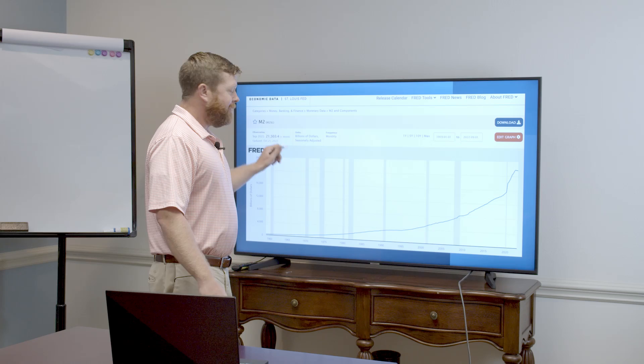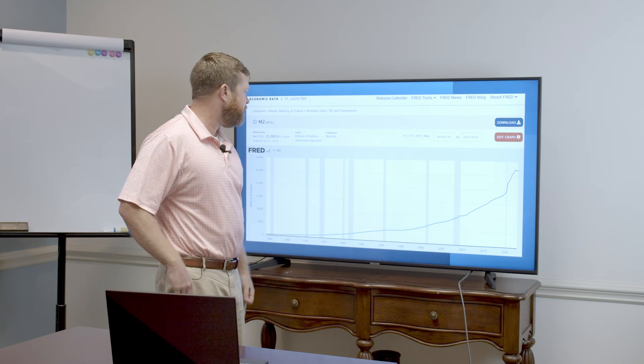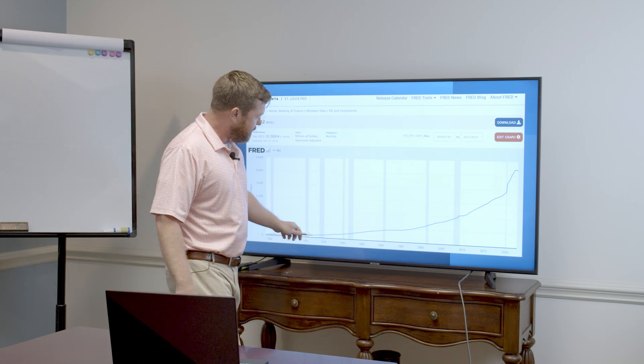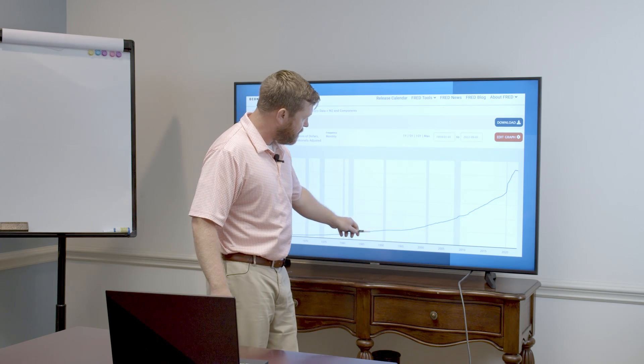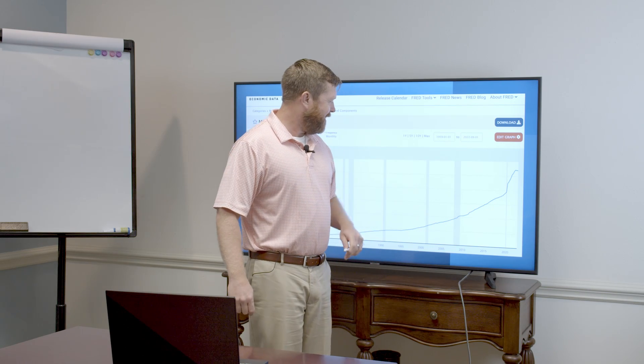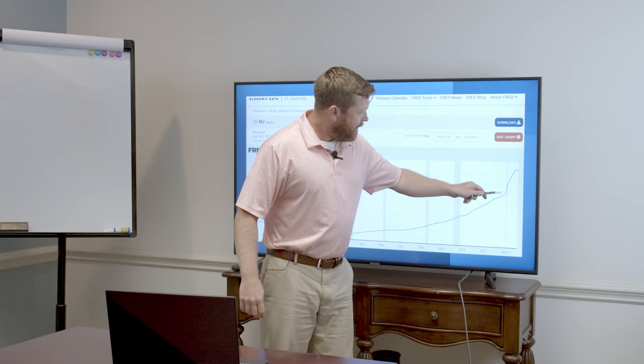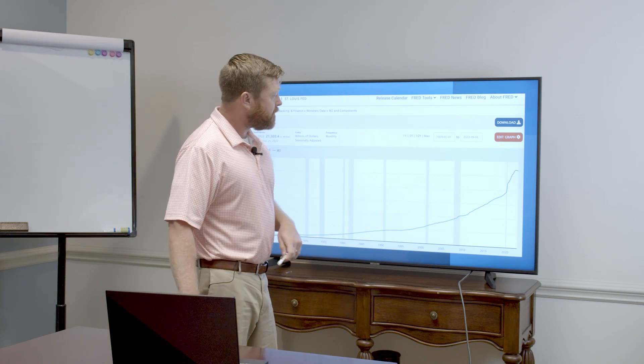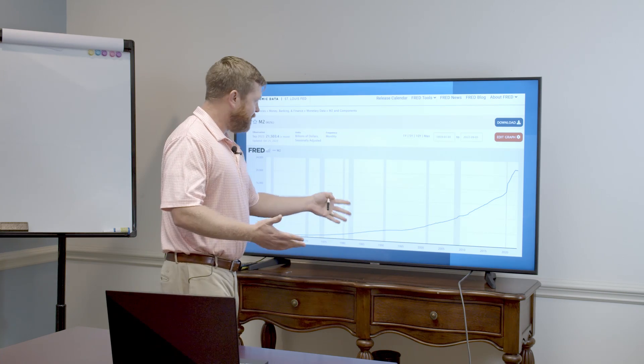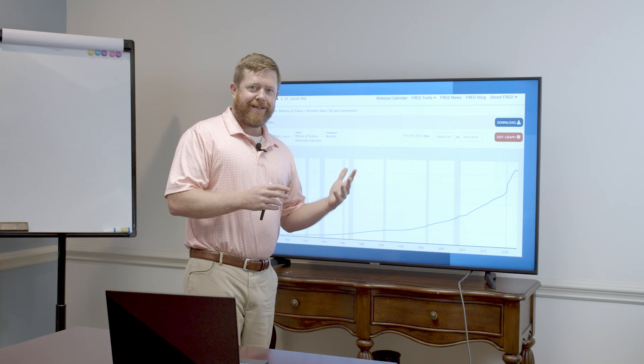Here we've got M2, M2SL, if you will. And we're looking all the way back to 1960 and how our money supply has grown. And then we get to the Great Recession after our no house left behind, and then the COVID explosion of money supply.